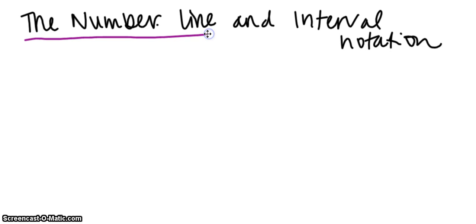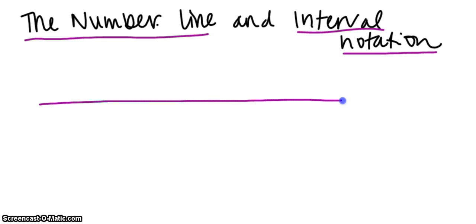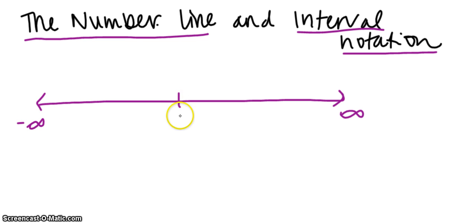Today we're going to talk about the number line and interval notation, which you may have seen before, but we're going to go over it because it will be used often in this course. The number line includes numbers ranging from negative infinity to infinity — all real numbers, everything rational and irrational, negative and positive.